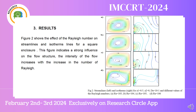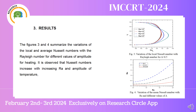In the results, this figure shows the effect of Rayleigh number on streamlines and isothermal lines for a square enclosure. It indicates a strong influence on the flow structure; the intensity of the flow increases with increasing Rayleigh number. The following figures summarize the variation of the local and average Nusselt numbers with the Rayleigh number for different values of amplitude for heating. It is observed that Nusselt numbers increase with increasing Rayleigh number and amplitude of temperature.